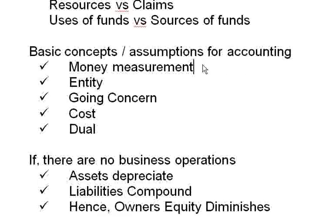When we do accounting, there are basic concepts or assumptions. First is money measurement — everything is measured in terms of money, and things that cannot be measured in money are omitted from the balance sheet. Second is the entity concept — the owner is a separate entity from the business, and the owner's accounts are maintained separately. Third is going concern — we assume the company is not going to close down in the near future and will run for an indefinitely long time.